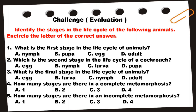Number four: How many stages are there in a complete metamorphosis? A. One. B. Two. C. Three. D. Four.